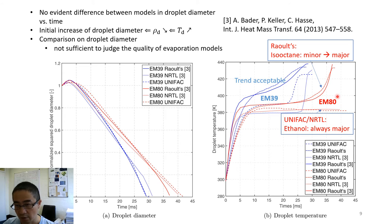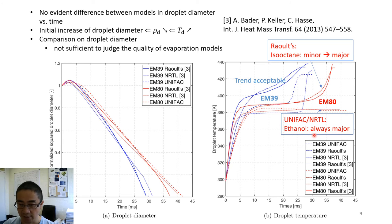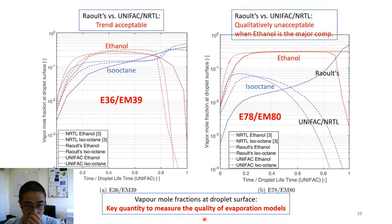For the high-ethanol case where ethanol is the predominantly major component, at the later stage of droplet evaporation the models give very different predictions. In Raoult's law, at the later stage of evaporation iso-octane becomes the major component because ethanol always evaporates faster. But for UNIFAC and NRTL, ethanol remains as the major component at the droplet surface, which controls the droplet temperature. We believe the vapor mole fraction at the droplet surface is a key quantity to measure the quality of evaporation models.